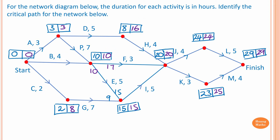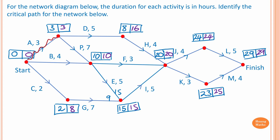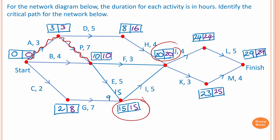The earliest and latest starting times are now complete for each activity. To work out the critical path, the float time must equal zero — that is, latest starting time minus earliest starting time equals zero. We have float time of zero here, and then three minus three is zero, so that is the critical path. However, one path is not right: twenty minus three does not equal ten, so that is not a critical path.